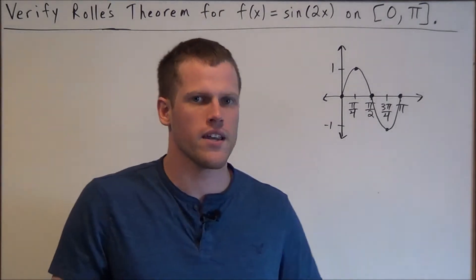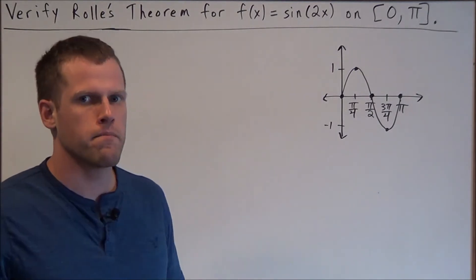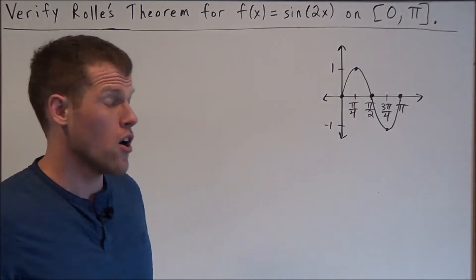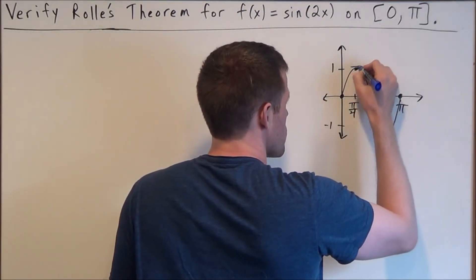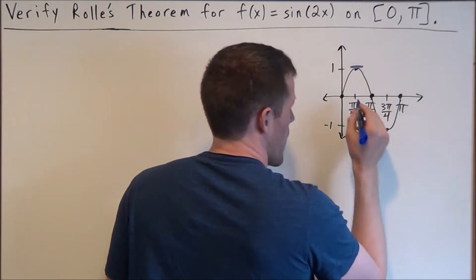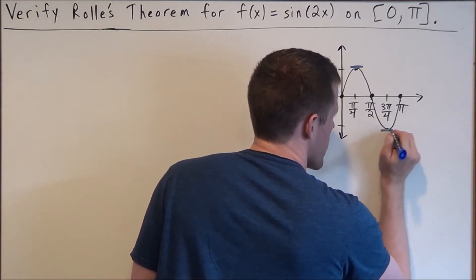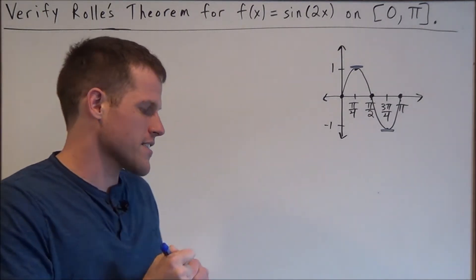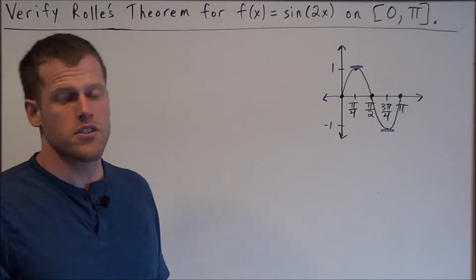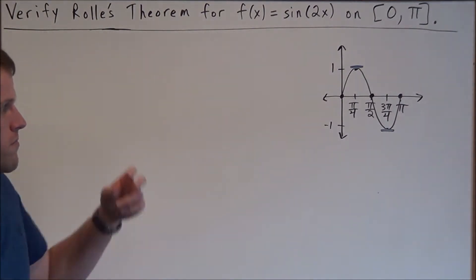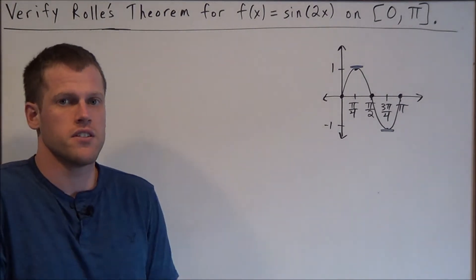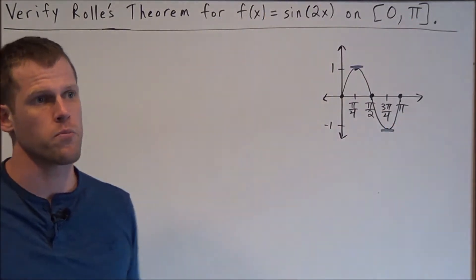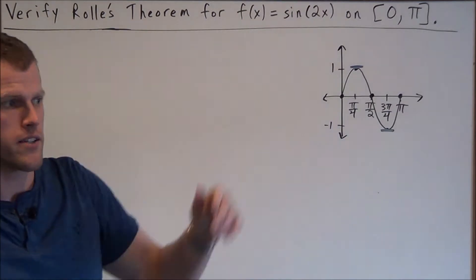Right away, before any heavy lifting with the calculus, we're trying to find points between 0 and pi where the derivative is equal to 0. From the sketch, two values jump out: at pi/4 the slope is 0, and at 3pi/4 the slope is 0. But in a test setting you have to show work, so we'll apply the theorem. The first two conditions — continuity on the closed interval and differentiability on the open interval — are easy to state for this function.